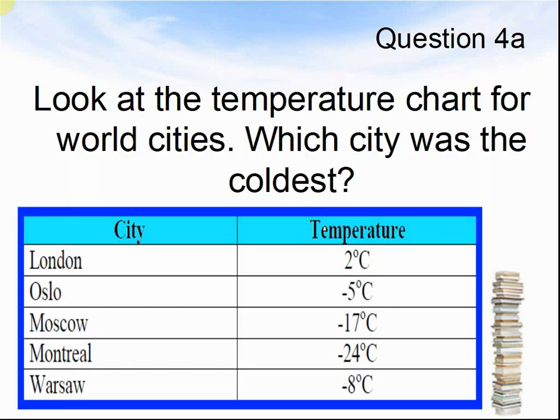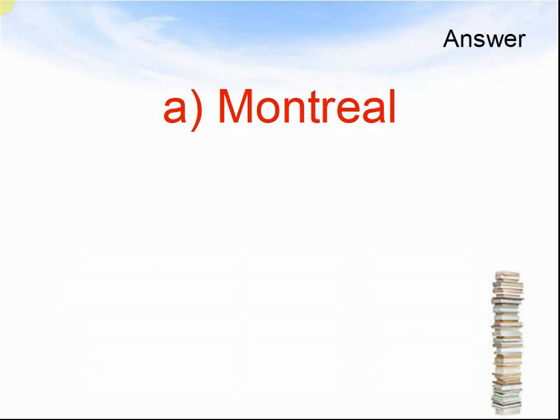Question 4a. Look at the temperature chart for the world cities. Which city was the coldest? Pause the video until you are ready to see the answers. The answer was Montreal was the coldest. Let's look at the next question.